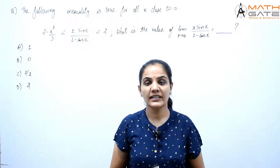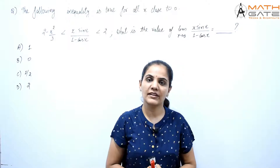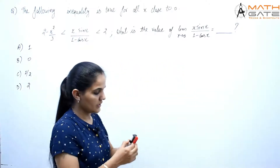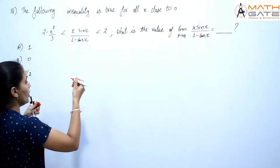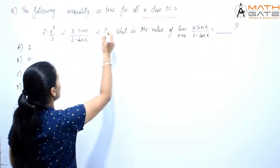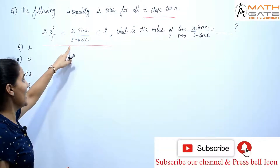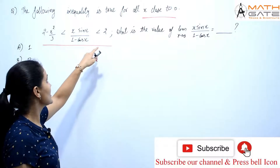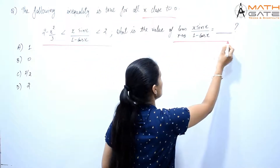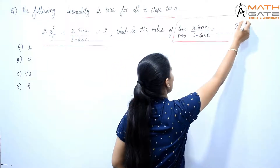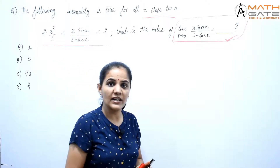Hello students, welcome to MapGate. Let's discuss the next question asked in GATE 2019 civil branch. The question is: the following inequality is true for all x close to 0 — the inequality is (2 - x²/3) < x·sin(x)/(1 - cos(x)) < 2. What is the value of the limit as x tends to 0 of x·sin(x)/(1 - cos(x))?